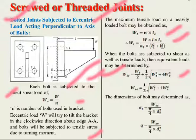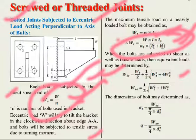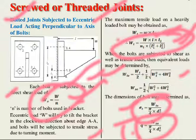When bolts are subjected to both shear and tensile loads, the equivalent tensile load is: Wte = Wt/2 + (1/2)√(Wt² + 4Ws²), and the equivalent shear load is Wse = (1/2)√(Wt² + 4Ws²). The tensile stress is σt = 4Wte / (π × dc²), and shear stress is τ = Wse / (π/4 × dc²), from which the core diameter can be determined.